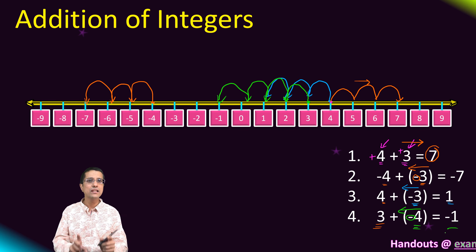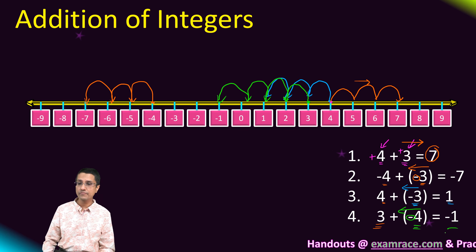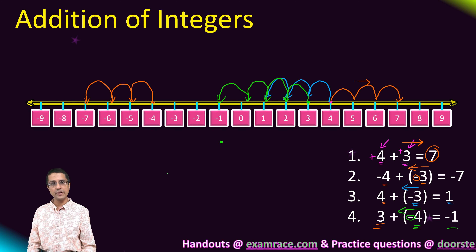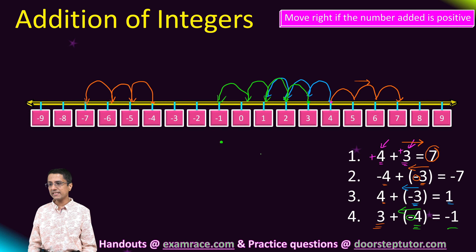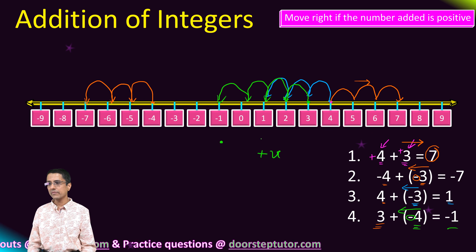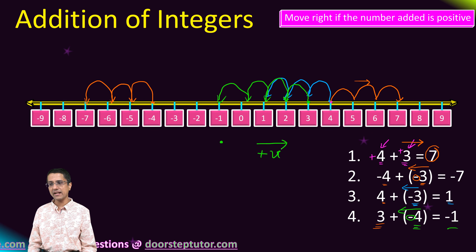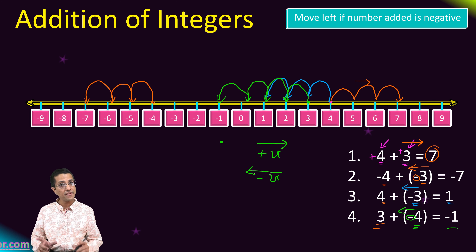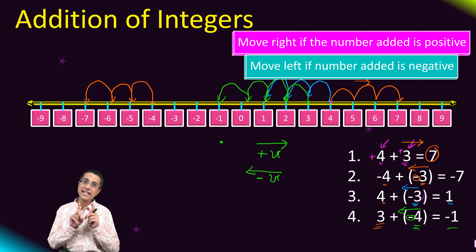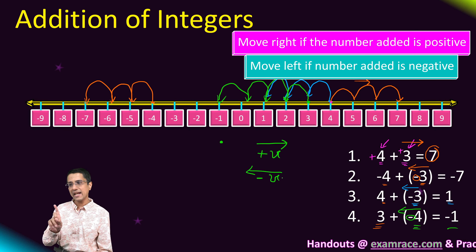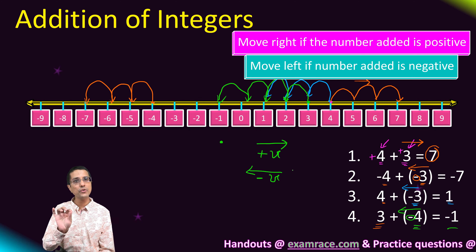The rule for the number line method is simple: start from the first operand. If the second operand is positive, go towards the right. If the second operand is negative, go towards the left. Take as many jumps as the magnitude of the second operand and you will arrive at the correct answer.